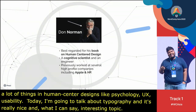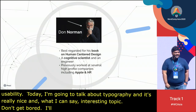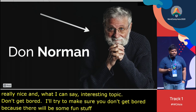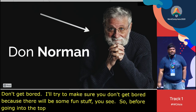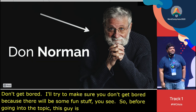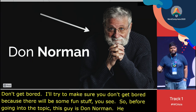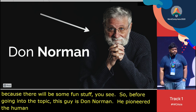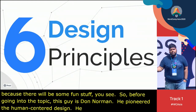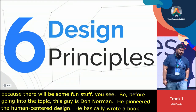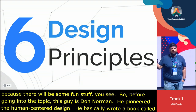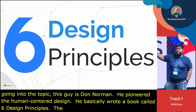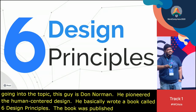Don't get bored — I'll try to make sure you don't, because there will be some fun stuff. This guy is Don Norman. He's very popular because he pioneered human-centered design principles back in the 80s. He worked at famous companies like Apple and HP, and he basically wrote a book called The Design of Everyday Things. He gave us six design principles that have stood the test of time, published in the 80s and still being referenced for both digital and physical products.